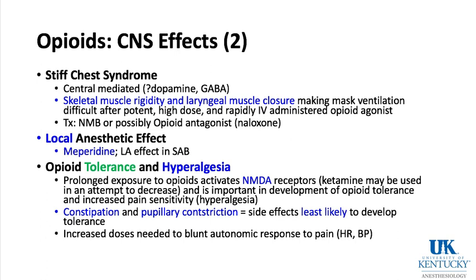Stiff chest syndrome is a side effect of potent opioids like sufentanil, fentanyl, and remifentanil if administered very rapidly. It is centrally mediated — probably dopamine or GABA receptor effects in the brain — and skeletal muscle rigidity ensues along with laryngeal muscle closure, making mask ventilation difficult or even impossible. When this occurs after a large opioid dose, you can give rocuronium to reverse it, or potentially naloxone, though that would reverse your opioid entirely.